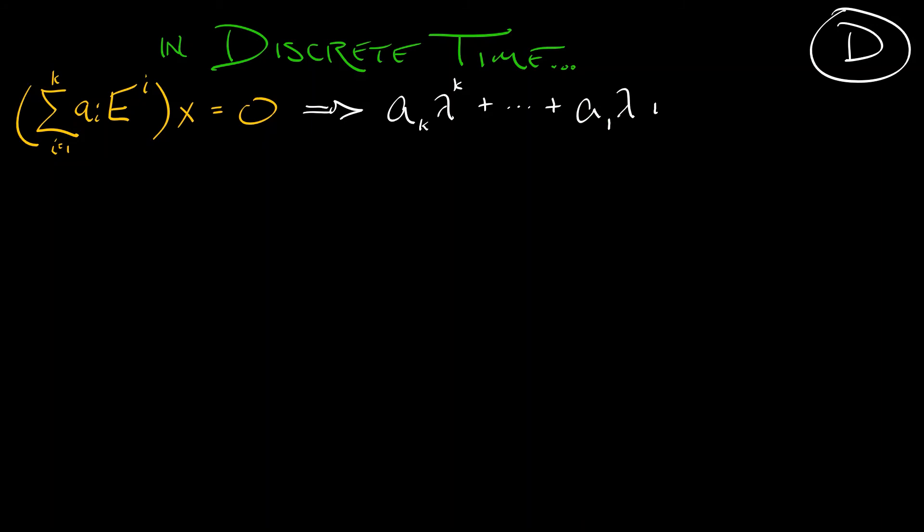Now, those are the different basis functions in continuous time. How do things change in discrete time? Well, we have a different operator, but the same characteristic polynomial, and we have the same cases that we had before.